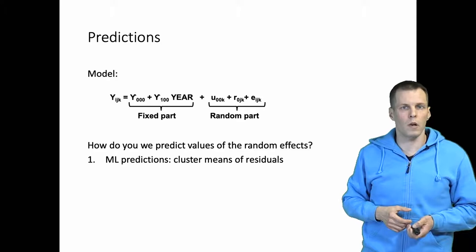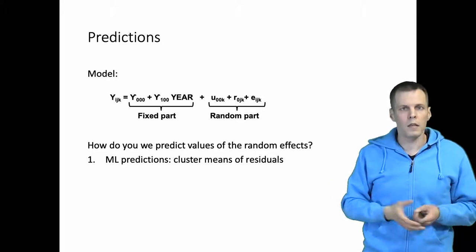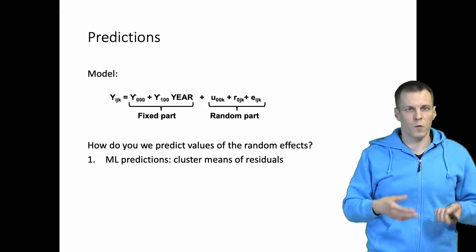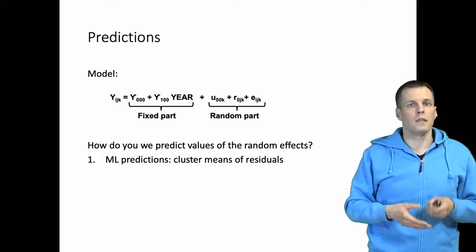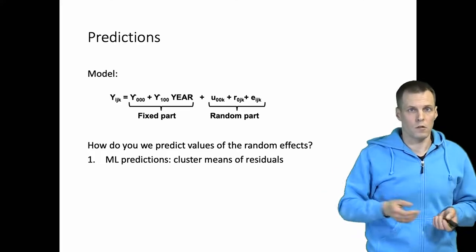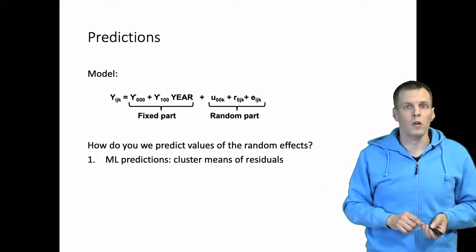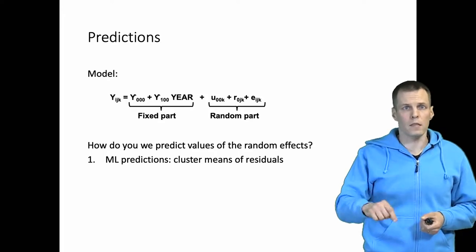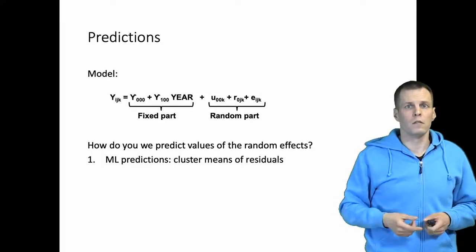This is called the maximum likelihood approach. So you basically take each cluster, you take the mean of residuals for each cluster, and that is the estimate of the random effect for that cluster. So that's a specific score and that's the best guess of a score for that cluster.